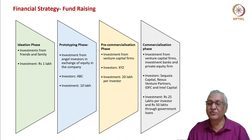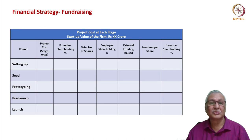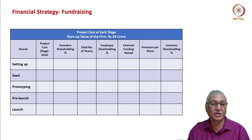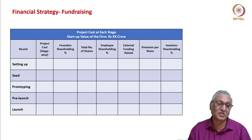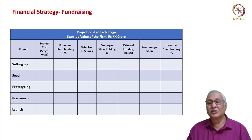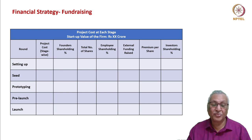Target investors include Sequoia Capital, Nexus Venture Partners, IDFC, and Intel Capital, with investment of ₹25 lakhs per investor and ₹50 lakhs through government loans. The fundraising strategy unfolds in five rounds: setting-up (100% own savings); seed (angel investors); prototyping (high-net-worth individuals or early VC); pre-launch (full VC investment); launch (VC in different series for expansion). Successive rounds of fundraise will be at higher valuations with lower dilution, bringing higher quantum of risk capital into the company.